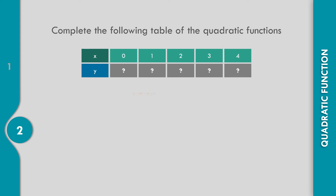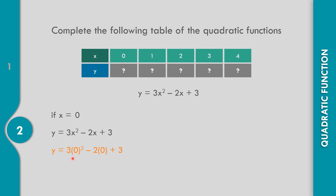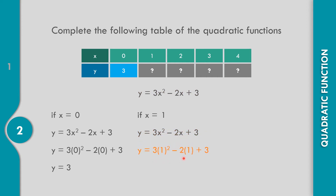How about example number 2? Let us replace the value of x from 0 to 4 into the given equation y equals 3x squared minus 2x plus 3. Replace x by 0: y equals 3 times 0 squared minus 2 times 0 plus 3. That is 0 minus 0 plus 3, so y equals 3. What if x equals 1? Replace: y equals 3 times 1 squared minus 2 times 1 plus 3. That is 3 minus 2 plus 3, which equals 4.